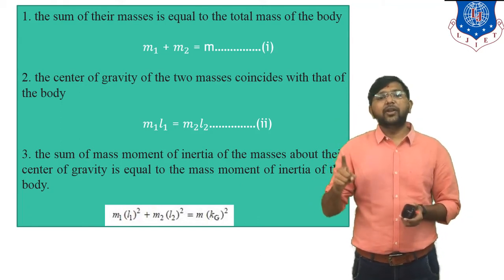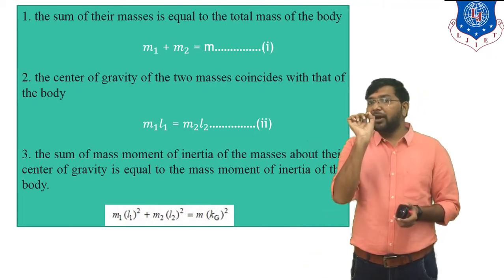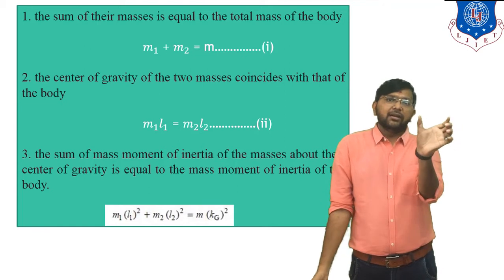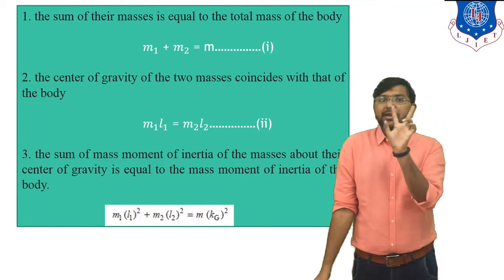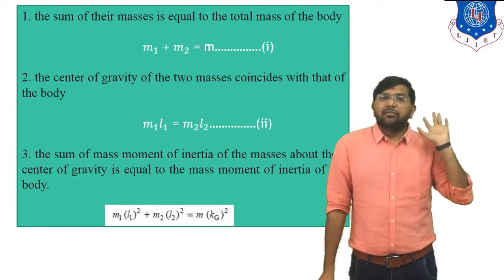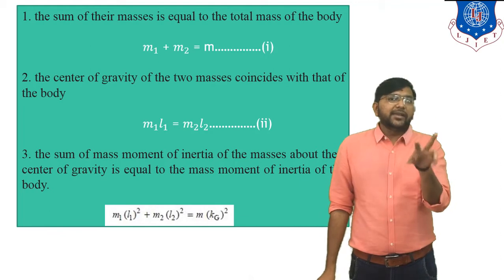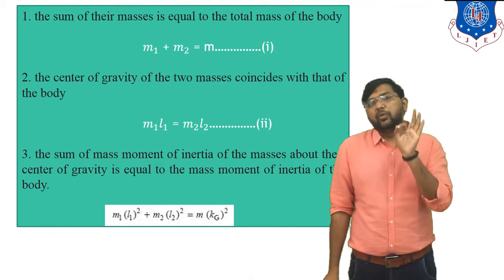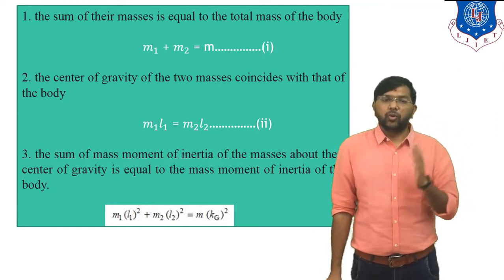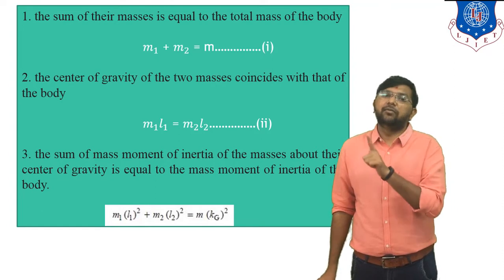Second condition: the center of gravity of the two-mass system must coincide with that of the body. The distance between G and M1 is small L1, and between G and M2 is small L2. Although the values of M1, M2 and L1, L2 may differ, the product M1×L1 must equal M2×L2. So: M1×L1 = M2×L2. That is the second condition.